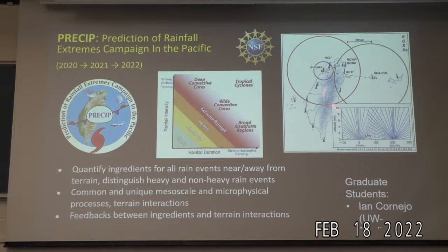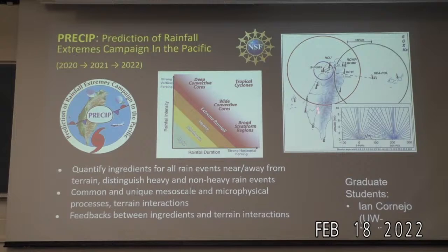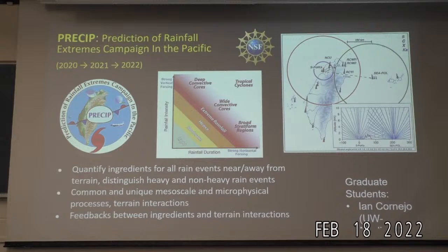Moving back to Taiwan — as a graduate student I was there to look at precipitation, and we were supposed to return in 2020 and then last year. Fingers crossed, we're going this May. Taiwan is a natural laboratory for studying extreme rainfall that exceeds what we see in this region of the world. It's another mountainous region where we're studying the ingredients of rainfall both near and away from the terrain, considering duration-intensity spectrums and moisture.